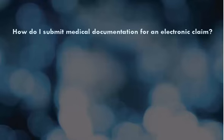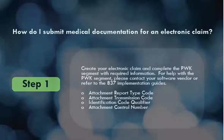How do I submit medical documentation for an electronic claim? Step 1: Create your electronic claim and complete the PWK segment with required information. For help with the PWK segment, please contact your software vendor or refer to the 837 implementation guides. Required fields include: attachment report type code, attachment transmission code, identification code qualifier, and attachment control number.